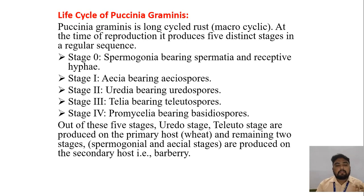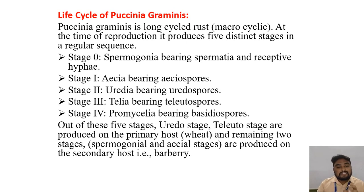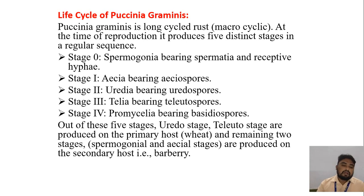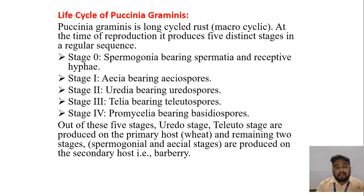Stage 1: Aecia bearing aeciospores. Stage 2: Uredinia bearing urediniospores. Stage 3: Telia bearing teliospores. Stage 4: Promycelia bearing basidiospores. Out of these five stages, urediniospores and teliospores are produced on the primary host, and the remaining stages are produced on the secondary host.